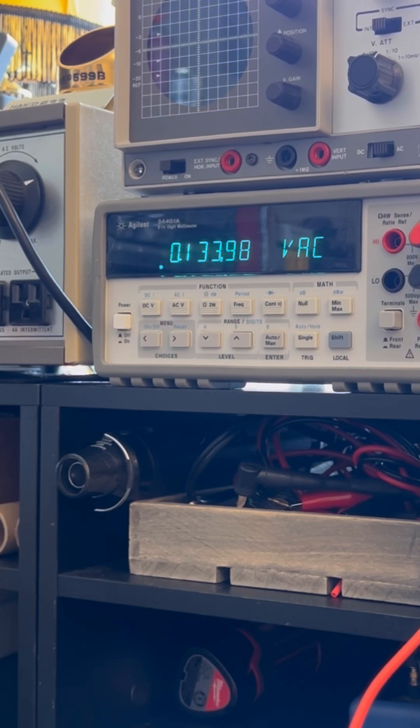This is a lot of ripple. I don't like to see that, especially in a high gain amp - you want as little as possible. Having 100 millivolts of ripple is just way too much.